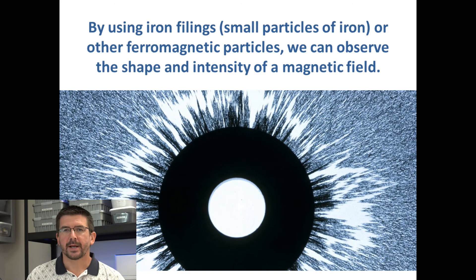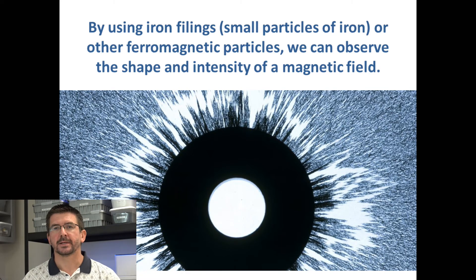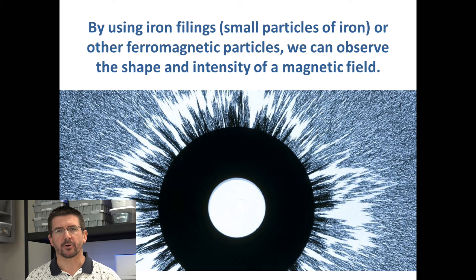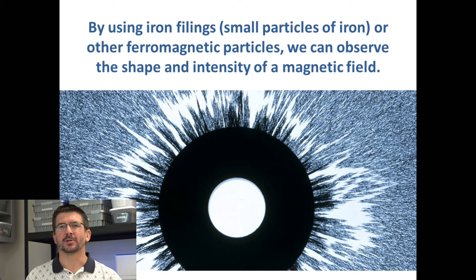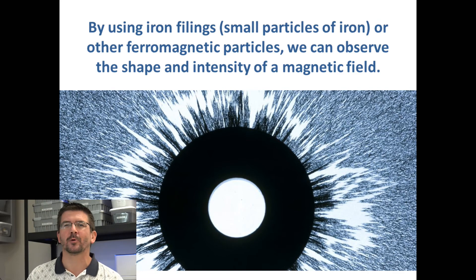In order to detect magnetic fields, we're going to look at two different ways in our next labs. The first of these ways is by simply using iron filings — small particles of iron, about the size of tiny pieces of sand — that we can spread around. Based on how those iron filings line up, we can see the direction of the lines of force from the magnet and the shape and strength of the magnetic field.